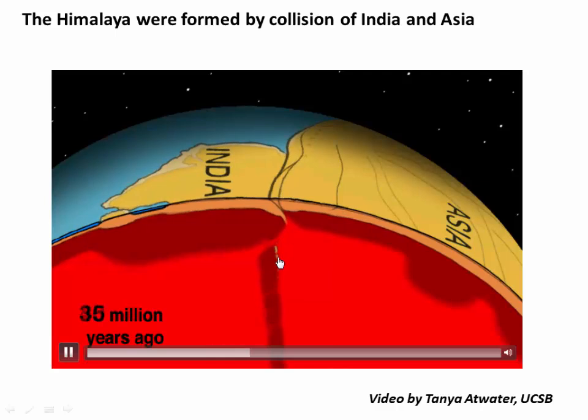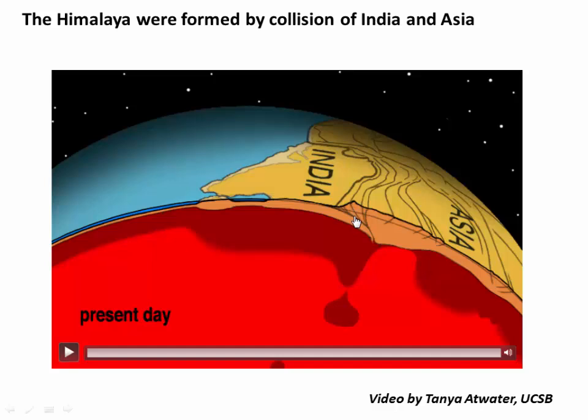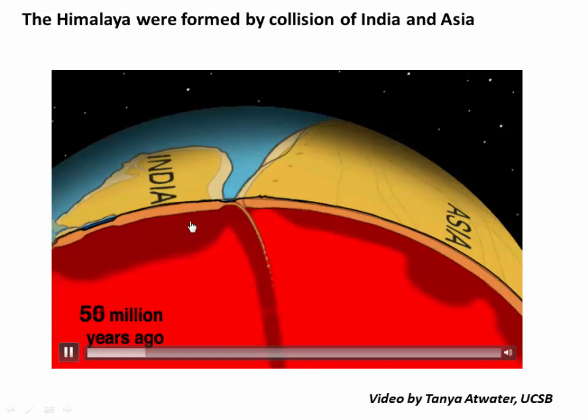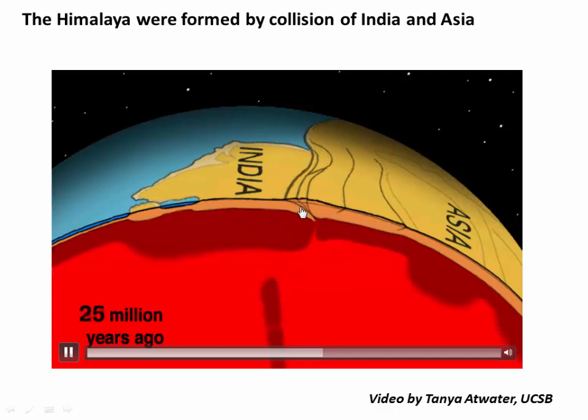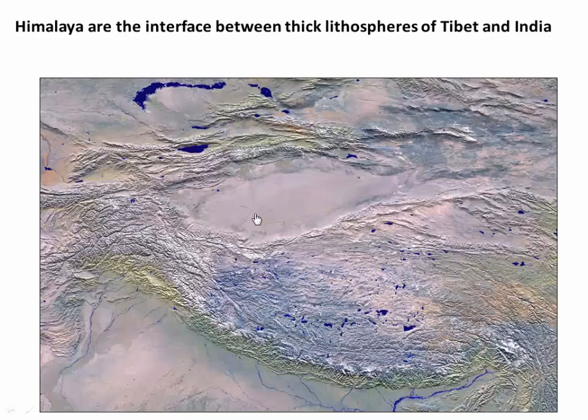We know the Himalaya happened as India collided northward with Asia. Notice what's happening as they collide: sediments are being scraped off the down-going India Plate, and they're being thickened and piled into this orogenic wedge, which is essentially a bunch of thrust faults that have scraped sediment off of India and thrust it southward out over the Indian Craton. Some of the key elements here are that India's going under Asia, and sediments are primarily being scraped off the Indian Plate and thrust southward into this structural wedge.